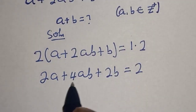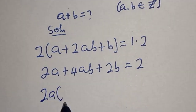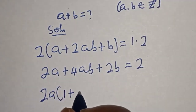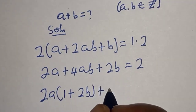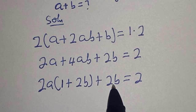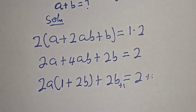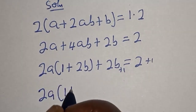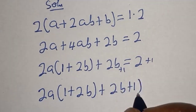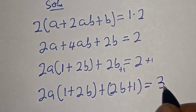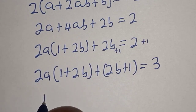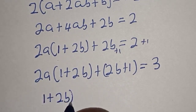Now 2a is common here — let's bring it out. We have 2a bracket 1 plus 2b, and then plus 2b is equal to 2. Now to make the factor 1 plus 2b, we add 1 to both sides. We have 2a plus 2b plus 2ab plus 1 is equal to 2 plus 1, that is 3. Then we have 1 plus 2b — let's bring it out. We have 1 plus 2b times 2a plus 1 is equal to 3.